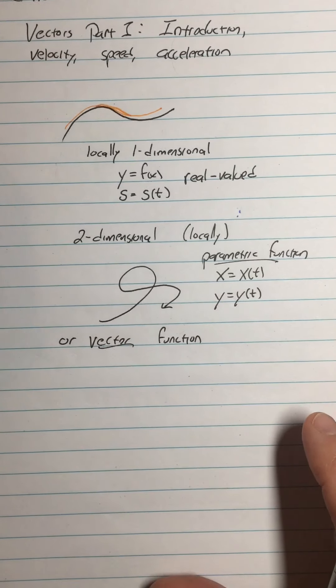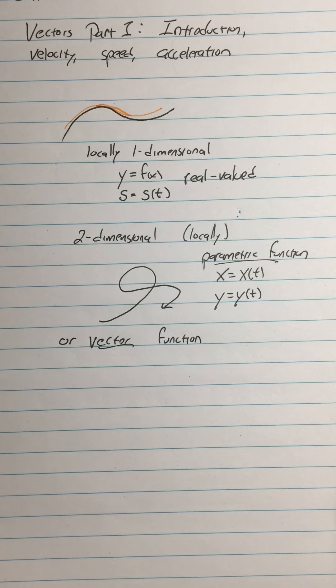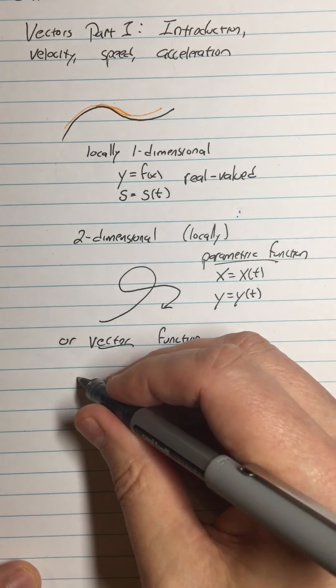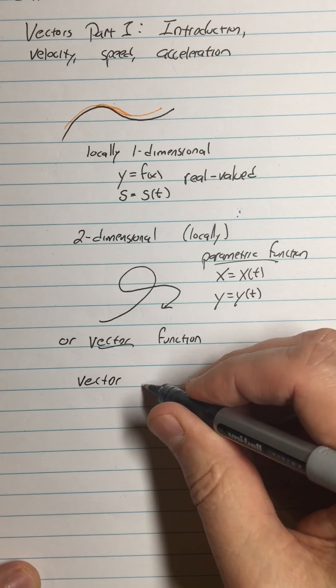Alright so people who have done a lot of physics already know a lot about vectors but I'm gonna assume not everybody has had physics so even if you have it's good to sort of see it again in a different context. So a vector, what is it? A vector is a magnitude and direction.